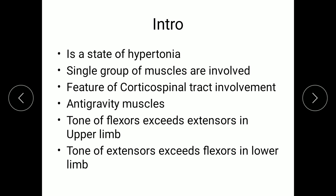Spasticity is velocity dependent. To demonstrate it, you have to perform the movement very rapidly — only then can you feel the increase in tone. There will also be waxing and waning: though there is an increase in tone initially, in the later part of the movement there will be waning in the tone, which is called the clasp knife phenomenon.